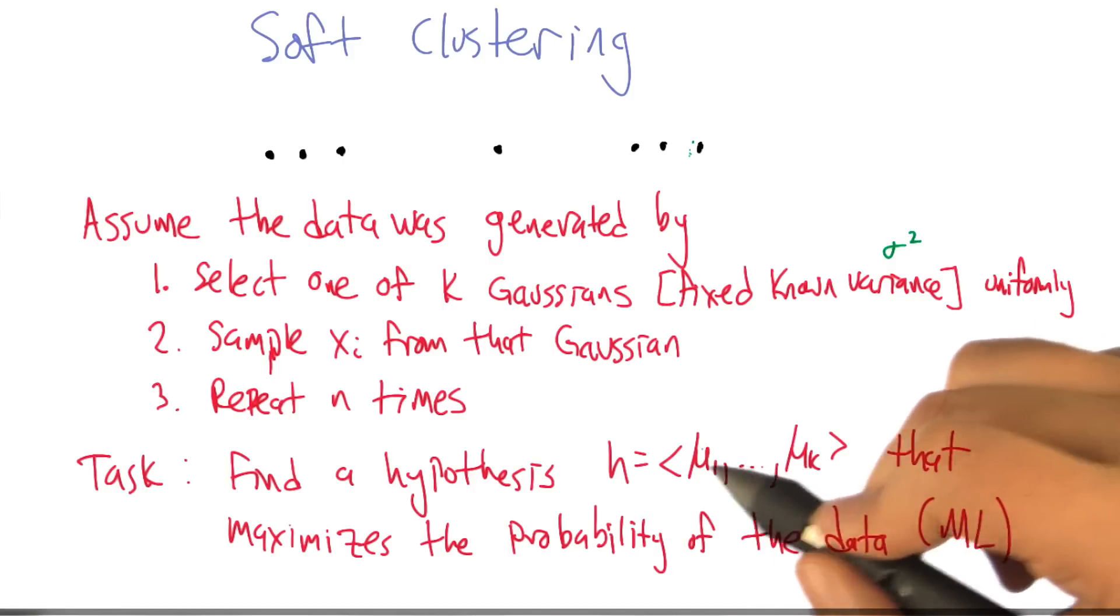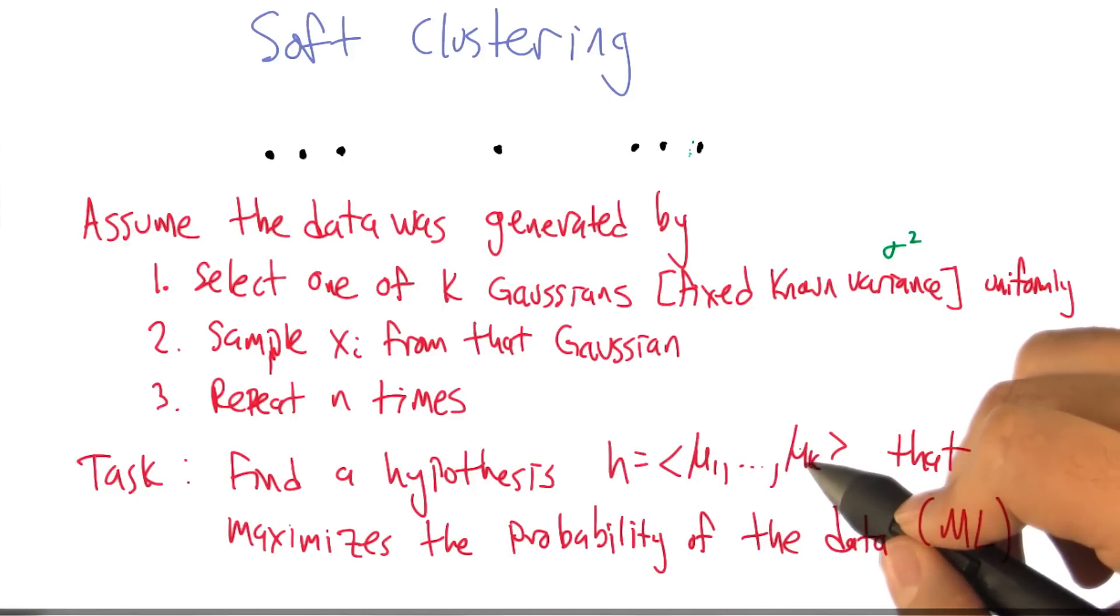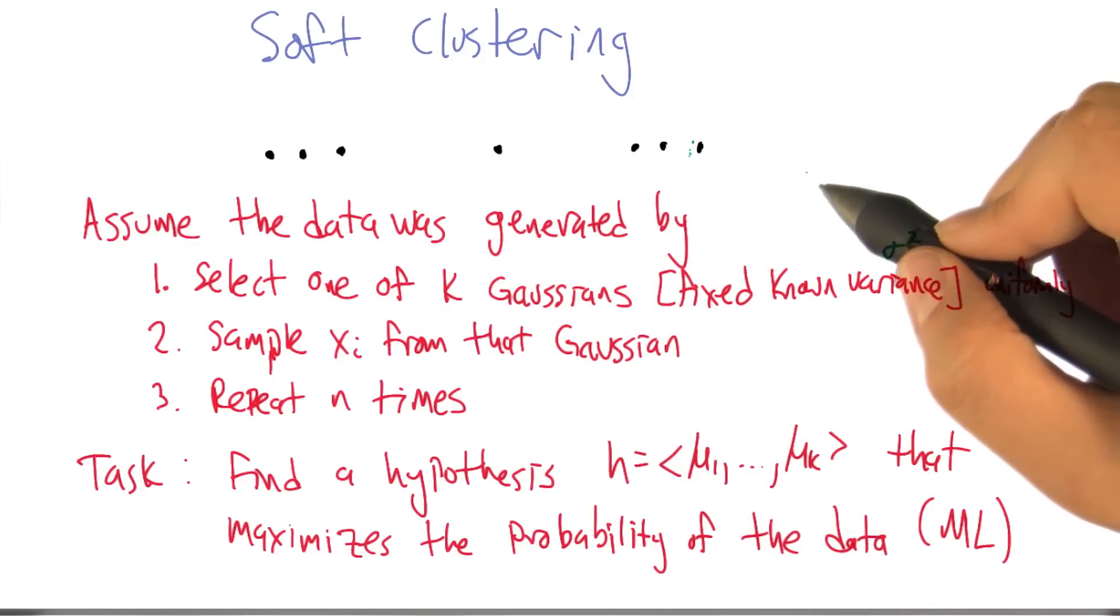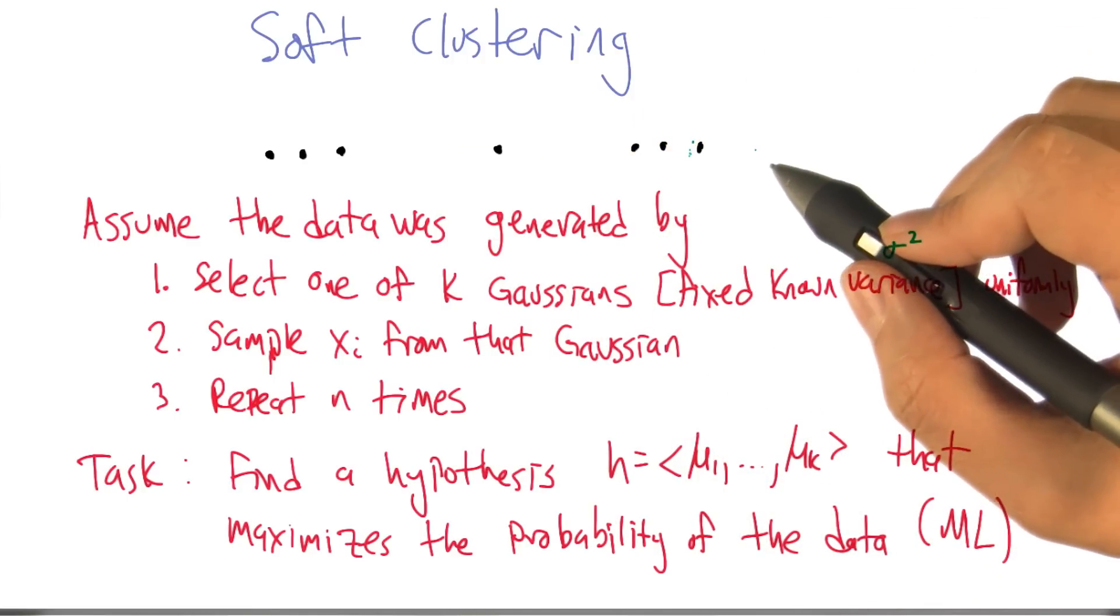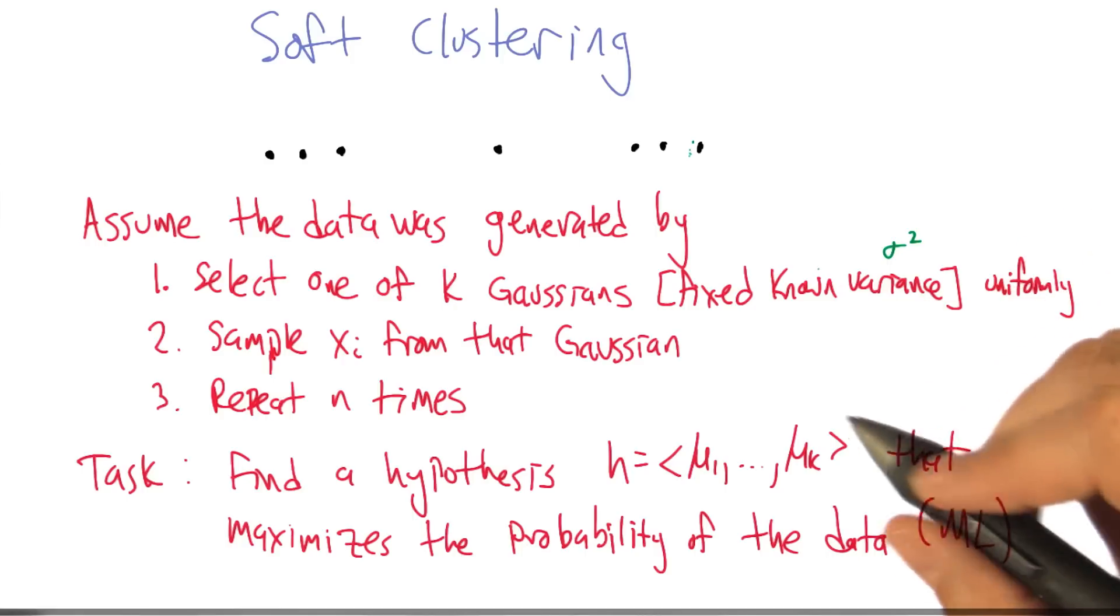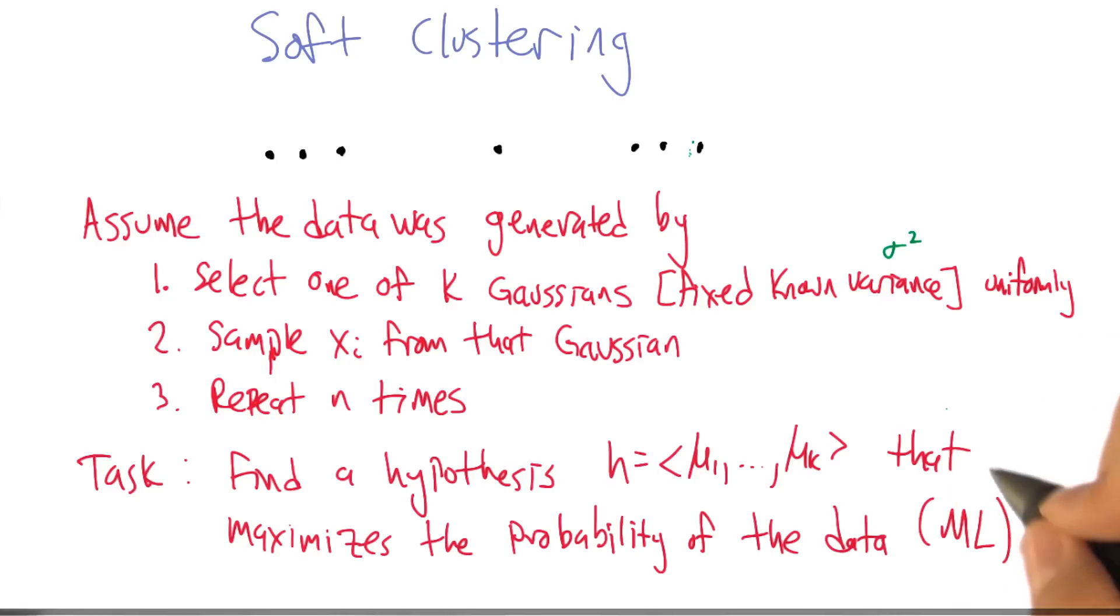So find me k mu values, which are the means of those Gaussian distributions. So that the probability of the data, given that hypothesis, is as high as possible. And this is an ML hypothesis, and ML of course stands for Michael Littman. I don't think that's right. Machine learning. That's closer, but not quite right. Maximum likelihood. That I think is correct.